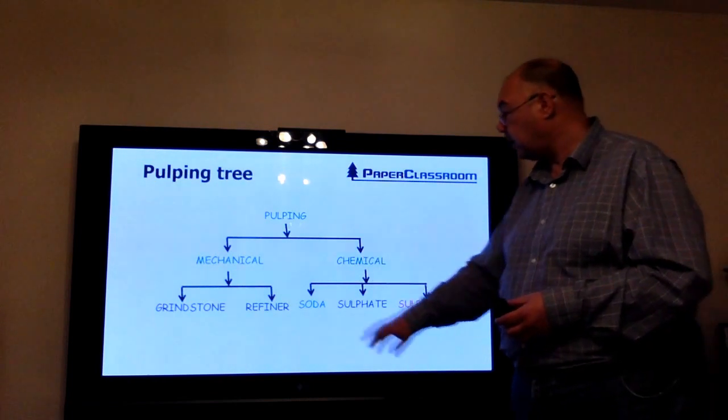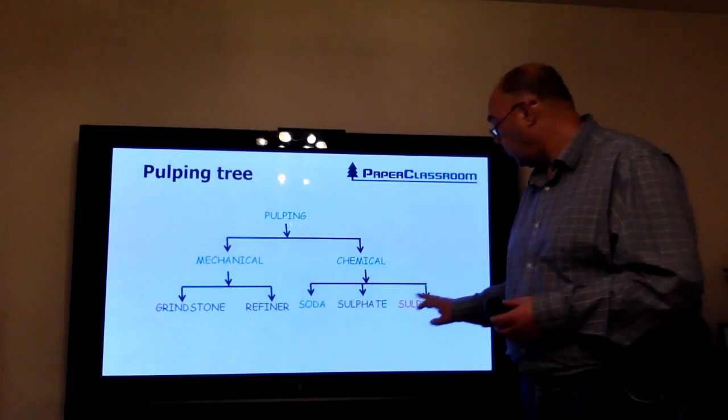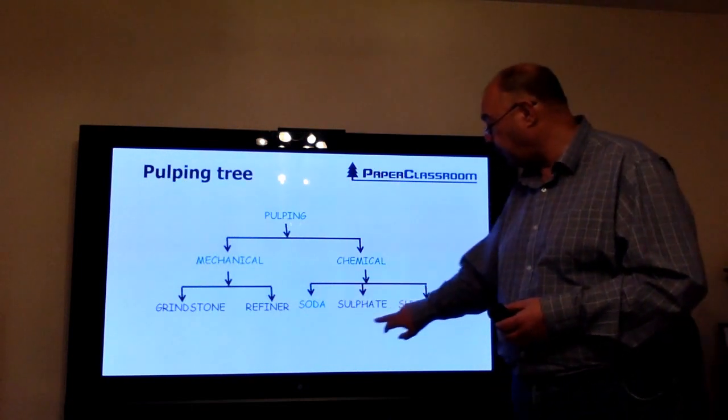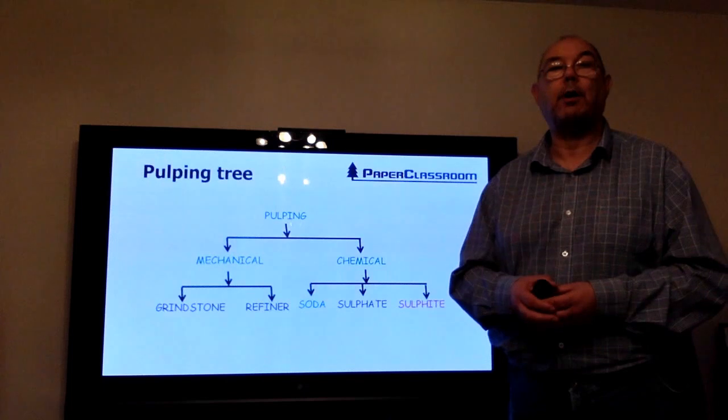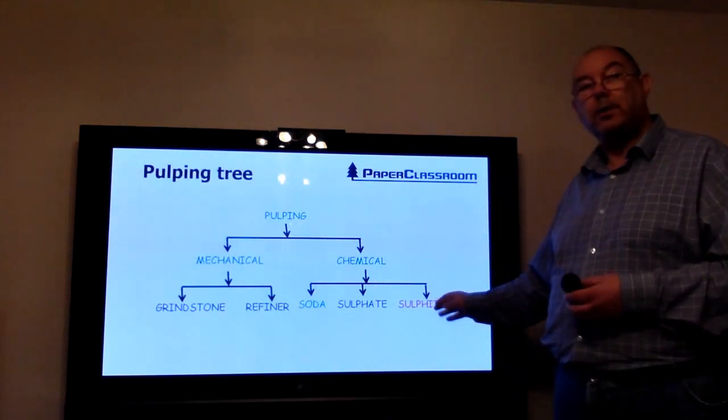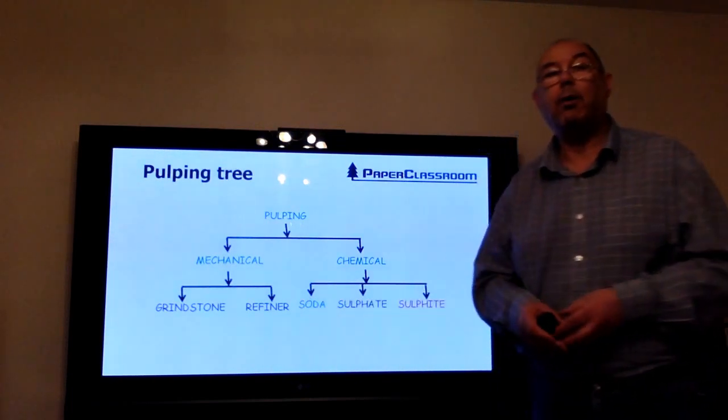Then we've got chemical pulps. We have the soda process, now only used for non-wood fibers. We have the sulfite process, and then finally we have the sulfate process, also known as the kraft process. I've done this one in red just to remind you that this is an acidic process, whereas these two are much more alkaline or alkaline in nature.